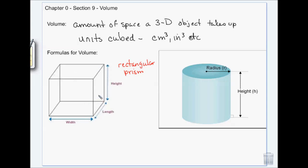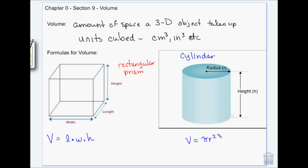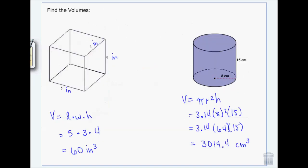If all the sides are the same length it's a cube — that's where 'cubed' comes from. If the sides are not the same length, it's called a rectangular prism, and the volume equals length times width times height. For a cylinder, the volume is pi r squared h — that's pi times the radius squared times the height. Always do the exponent first: square your radius, then multiply.